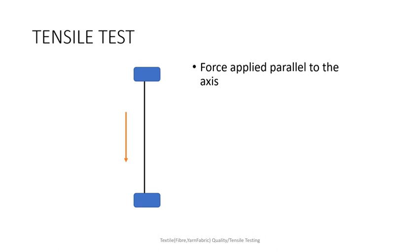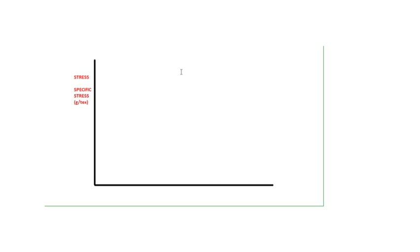Now let us see how a stress-strain graph is generated and understand the stress-strain curve. We have a y-axis and x-axis. On the y-axis it is stress or specific stress, with units of gram per tex, gram per denier, centinewton per tex, or centinewton per denier. On the x-axis it is strain percentage.